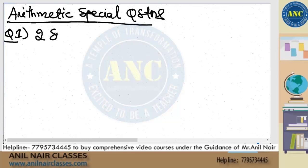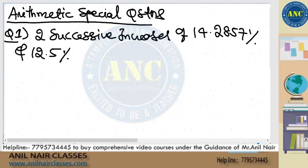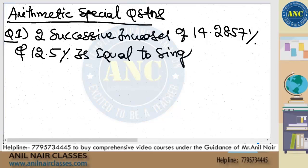Two successive increases of 14.2857 percentage and 12.5 percentage is equivalent to a single increase of what percentage?